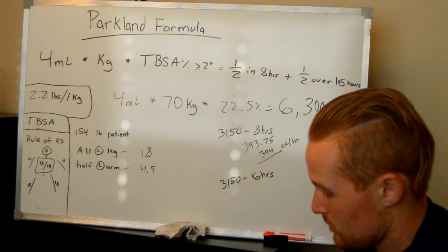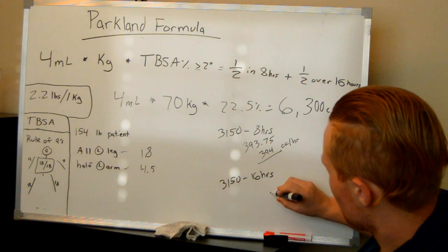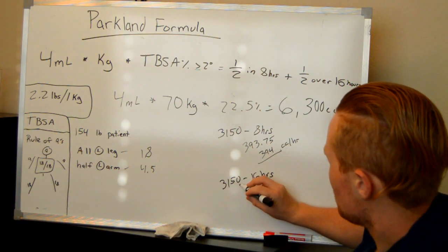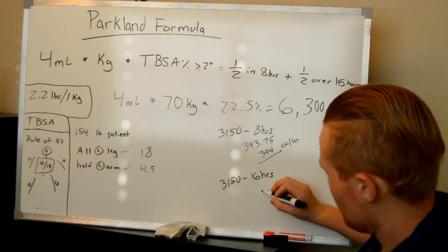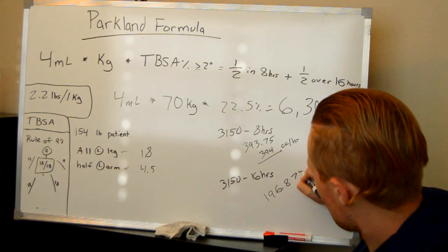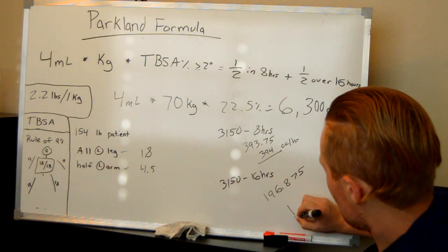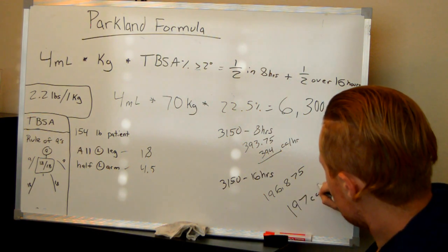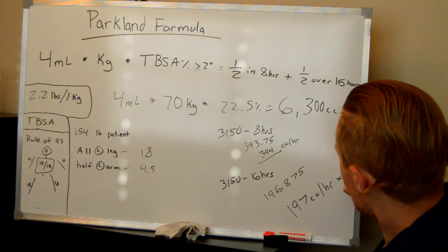Then, for the next subsequent 16 hours, you're going to run them 3,150 divided by 16. You got 196.875, and we're just going to round that up to 197 cc's per hour, over 16 hours.